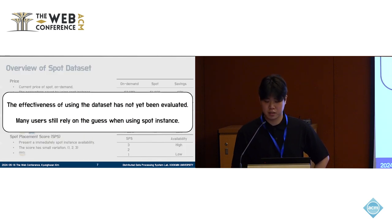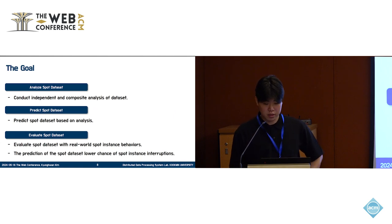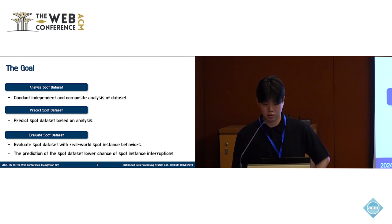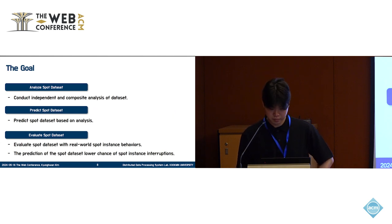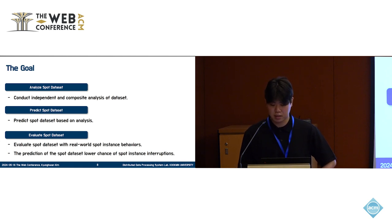However, the effectiveness of using this dataset has not yet been evaluated, and many users still rely on guesswork when using Spot instances. So in this work, we focus on analyzing and evaluating this new dataset, which remains unexplored. There are three main goals. First, we thoroughly analyzed the Spot dataset from major vendors including AWS, Azure, and GCP, aiming to understand the distribution and temporal change patterns and analyze their characteristics. Second, based on the changing characteristics of the Spot dataset, we will demonstrate their predictability. Third, we will evaluate the Spot dataset by conducting actual Spot instance termination experiments to identify the Spot data that best represents interruption, and show that it is possible to select stable Spot instances based on Spot prediction.